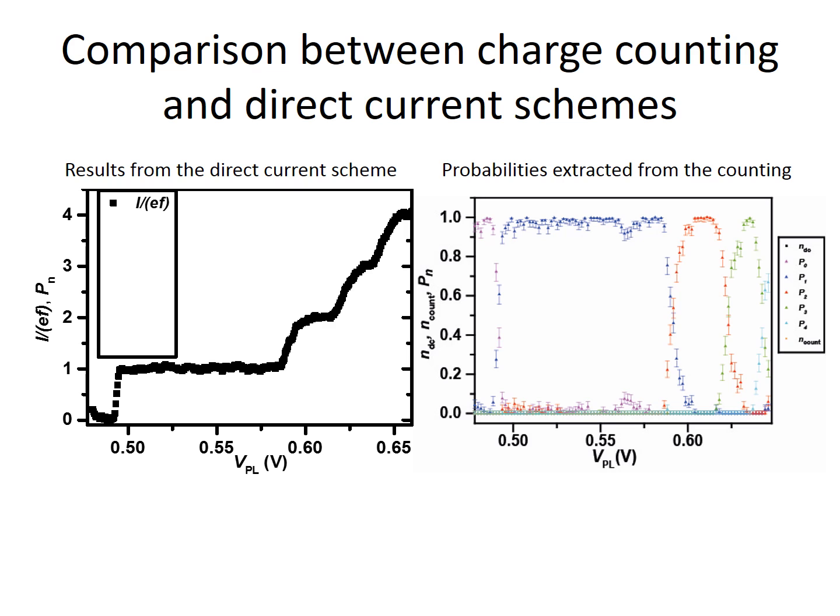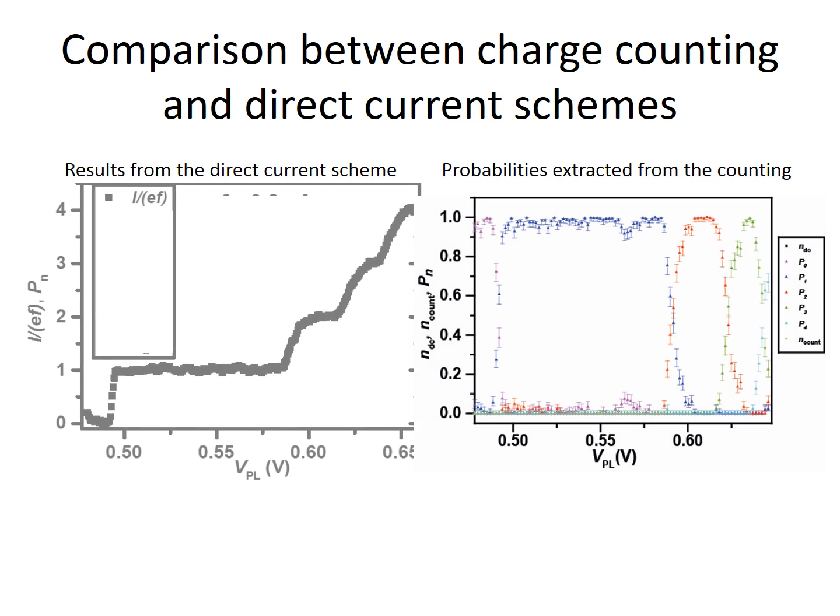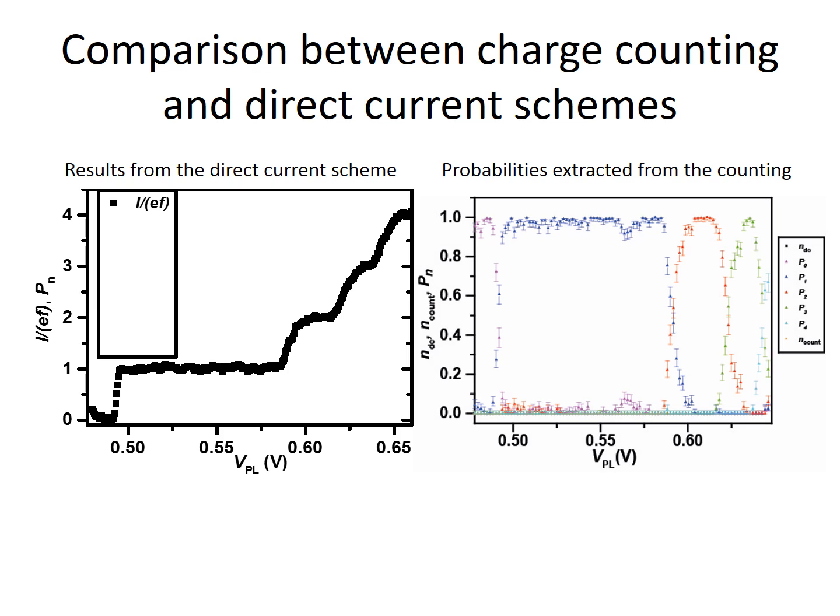We compare the direct current and electron counting schemes. On the left we have the direct output current of the pump as a function of the dot's DC potential. On the right we have the probabilities for different amounts of electrons transferred in the electron counting experiment.